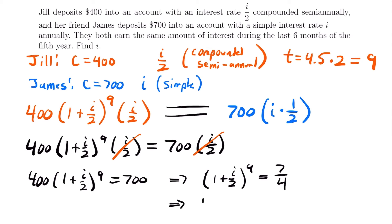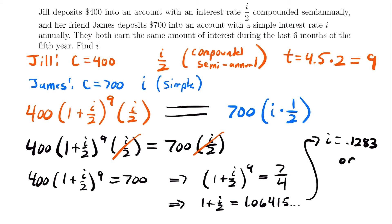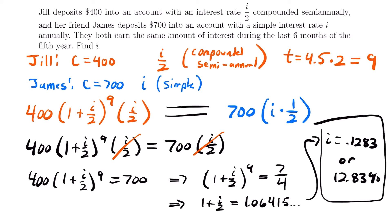Subtracting 1 from both sides and then multiplying by 2 to cancel the denominator, we find that i equals 0.1283, or 12.83%. That is our answer. This is a very difficult problem — the hardest part is setting up the equation to solve for your variable. Hopefully that made sense, and you're ready to move on to our next example, which is a lot easier.